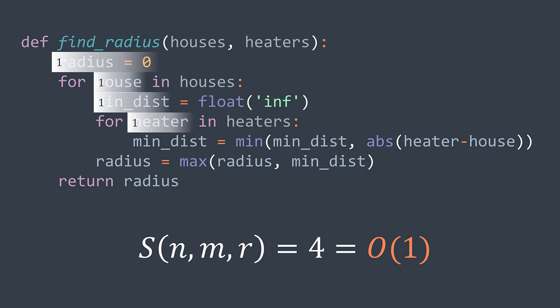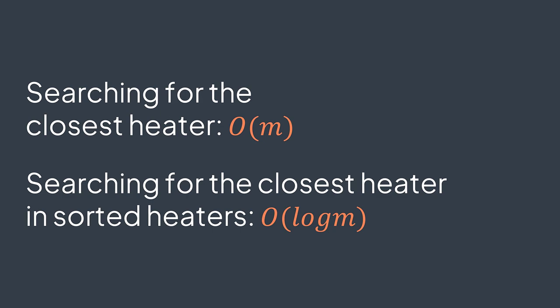Let's see if we can optimize this solution. Here we are performing a search on the array of heaters multiple times, traversing all heaters and performing linear search which costs O(m). But by sorting the heaters, we can search for the closest heater to a particular house using binary search, which costs O(log m).